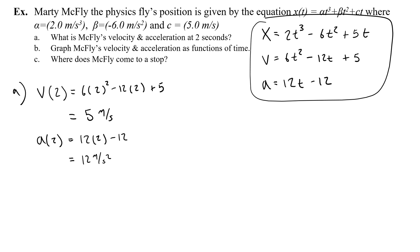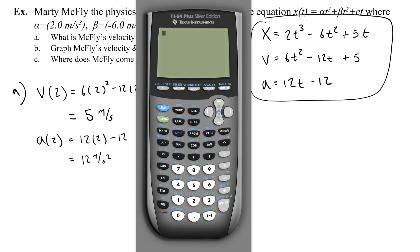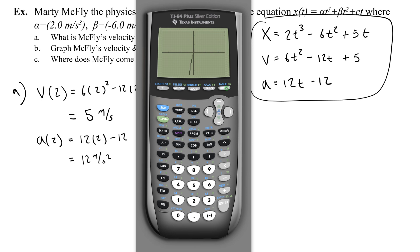Let's use a graphing calculator. Go to y equals and put in the position equation: 2x cubed minus 6x squared plus 5x — using x instead of t. Graph that, and we get the position of this fly. Using second calc, option 6 (derivative), I can find the derivative at any point. To find the velocity at 2 seconds, press enter, press 2, press enter again — and it tells me the slope at that point is 5 meters per second, confirming our earlier calculation.